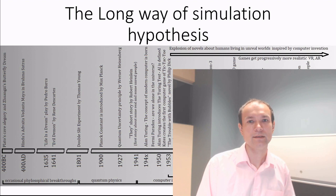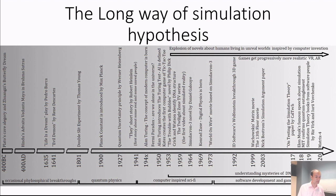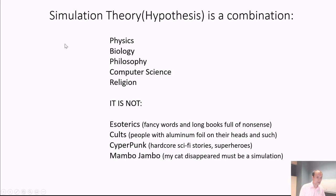I hear a lot of nonsense these days about simulation hypothesis. I think the best way to understand it is to go through the history that formed this movement. So let's go through this chart that starts all the way back in 400 BC and goes till the near future. We'll start first with a definition of fields of science and human knowledge that I believe form the simulation theory or hypothesis, and what is not part of it.